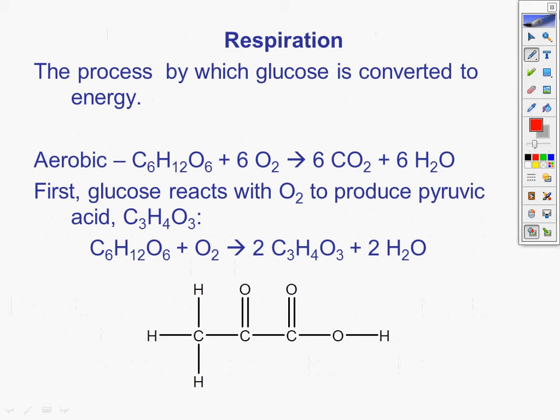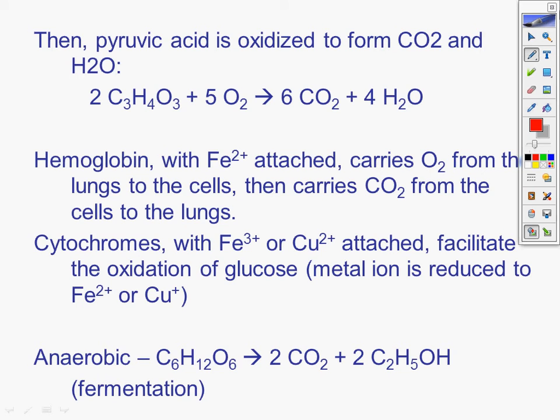Respiration. Aerobic respiration, you should know that. Glucose and oxygen makes carbon dioxide and water. Water comes out as urine and anything else that you have, and you breathe out carbon dioxide. You breathe in oxygen and glucose gives you the energy to go. And how does it work? First, glucose reacts with oxygen to produce pyruvic acid, C3H4O3. Then pyruvic acid is oxidized to form carbon dioxide and water. Hemoglobin with the iron 2+ attached carries oxygen from the lungs to the cells, then carries carbon dioxide from the cells to the lungs. Cytochromes with iron 3+ or copper 2+ attached facilitate the oxidation of glucose.